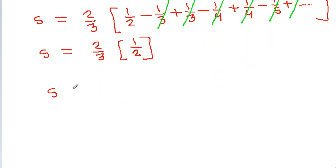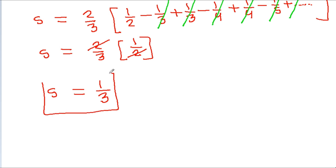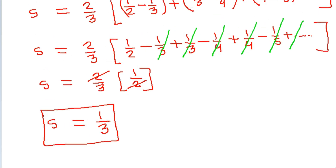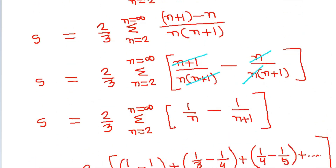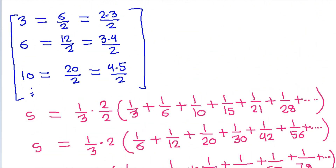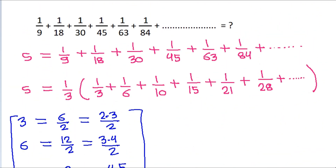And S is equal to — the 2 will get cancelled — so it is 1 by 3. The answer is 1 by 3.